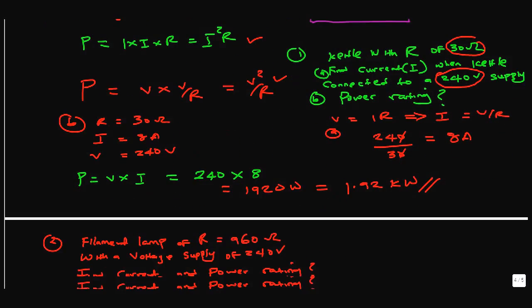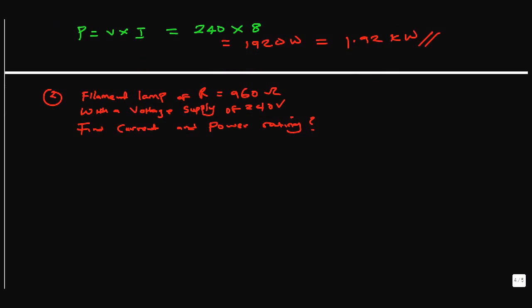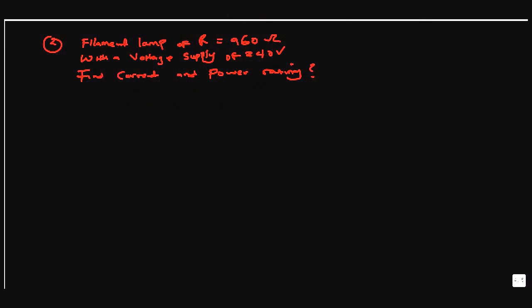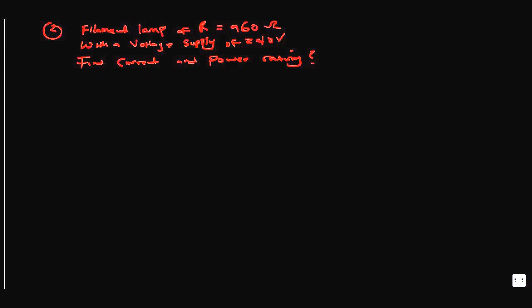Now one more problem involving electrical power rating before we talk about electrical energy. We have a lamp with a resistance of 960 ohms and a supply voltage of 240 volts. We'd like to know the current and the power rating of the lamp.